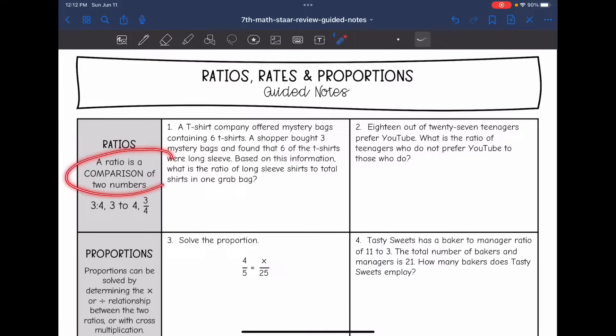A ratio is a comparison of two numbers, and there's three different ways to write ratios. 3 colon 4, which reads as 3 to 4, and then as a fraction, 3 over 4.